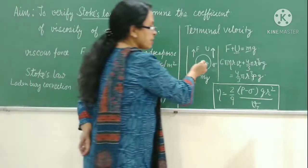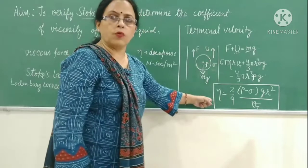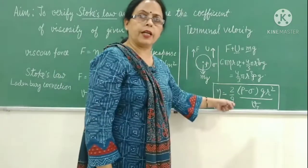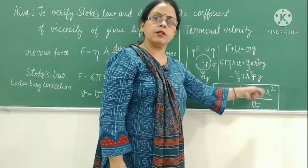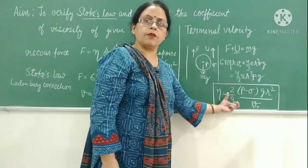When we solve this equation, we get the expression for coefficient of viscosity, which is 2 by 9 (rho minus sigma) g R square upon V_t. This is our working formula.